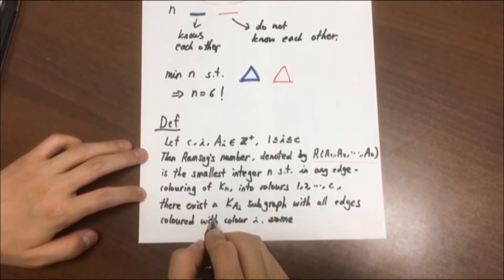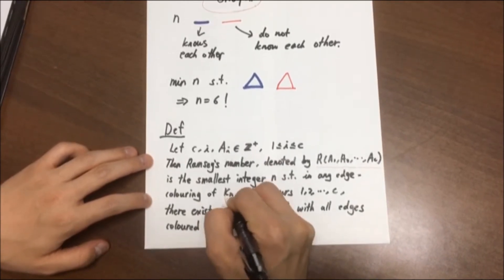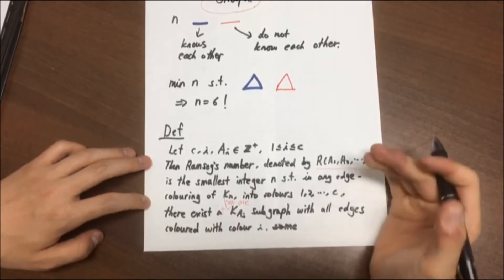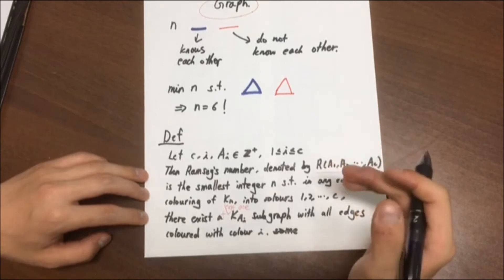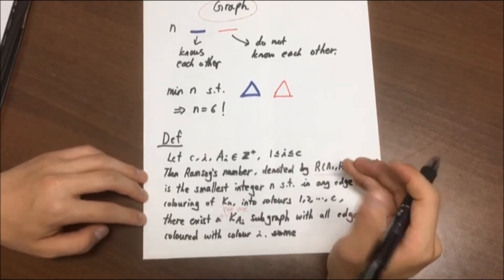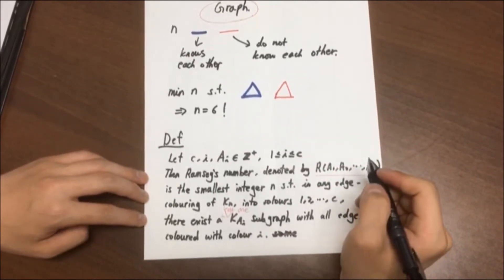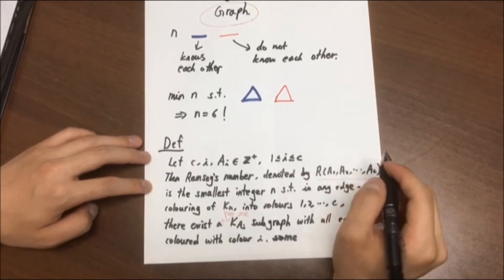there exists—sorry guys, there is a mistake. This should be at the end—at least one K_A_I subgraph with all edges colored with color I. Well, in this video, however, we're going to focus on specific case where every A_I is R_3, thus restricting the condition that for any K_N, we're guaranteed to find some monochromatic triangles.